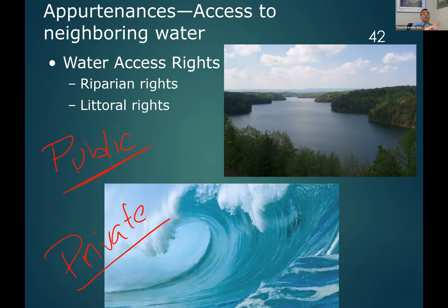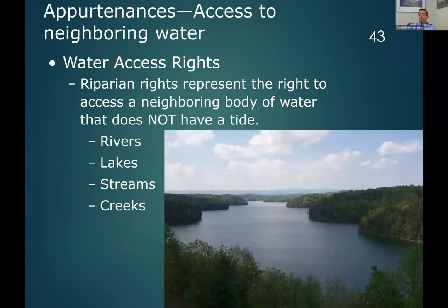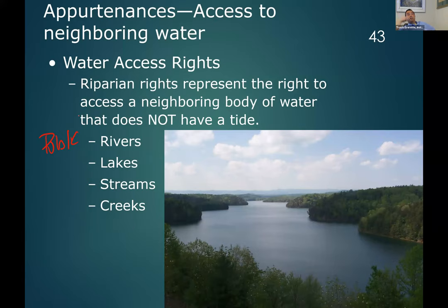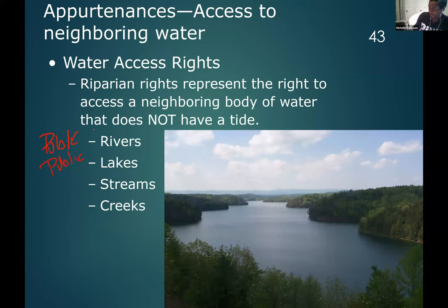Let's talk about different types of waterways. A river — public or private? Public, because it goes through a lot of people's properties. How about a lake? Public. How about a stream? That could be either — it could cut through multiple properties. How about a creek? Either or as well.